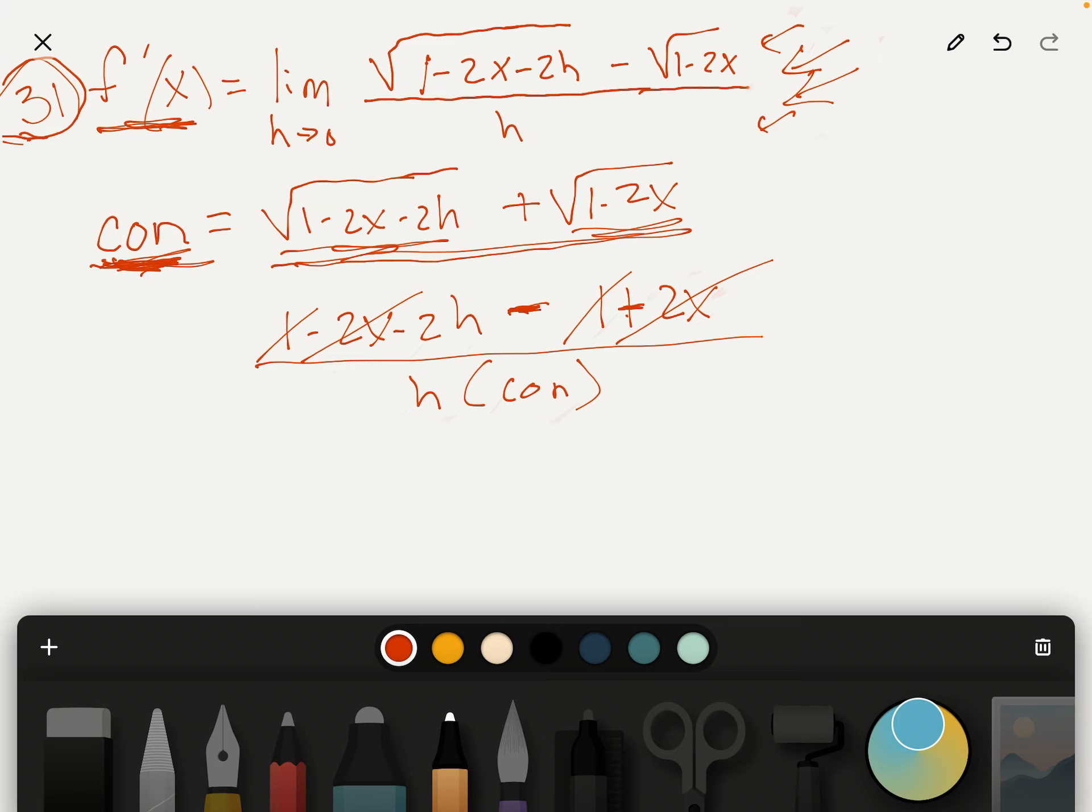And then you've got a minus 2h, but the h's cancel out. So you're left with minus 2 over the conjugate.